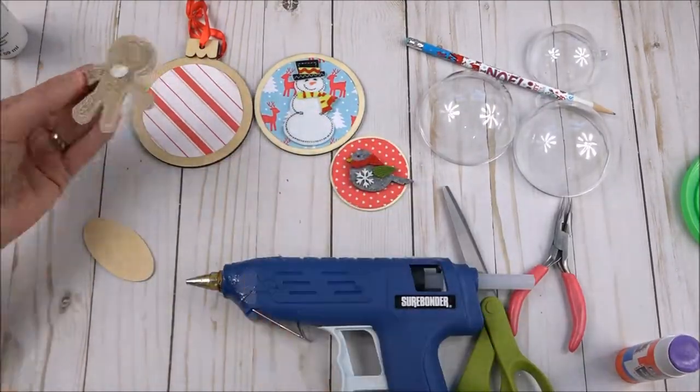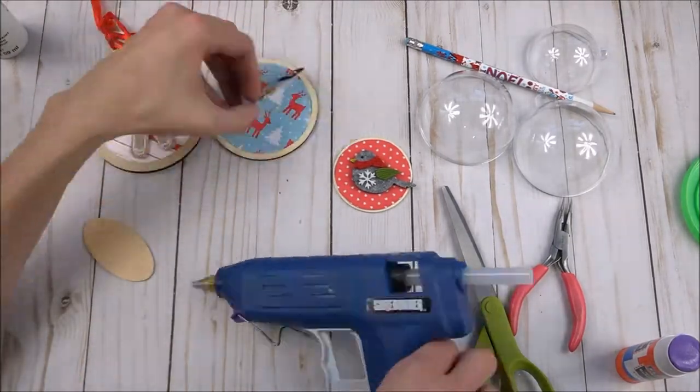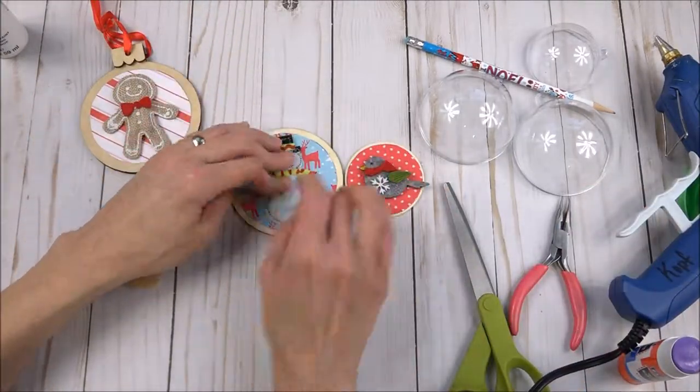For our ornaments we chose a gingerbread man, snowman, and a bird. Each were hot glued to the back of the snow globes.